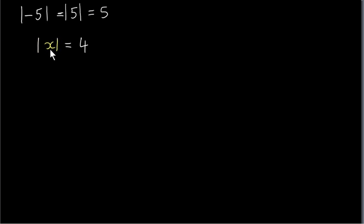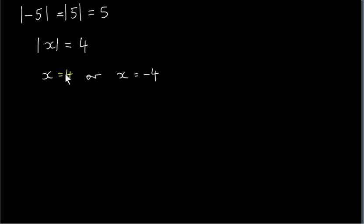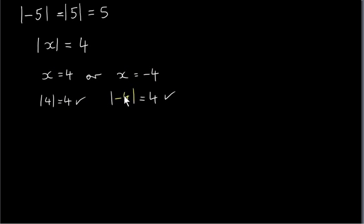Look at this equation: the modulus of x equals four. That means that either x could be four or minus four. If we put four in, we get the modulus of four equals four — that checks out. If we put minus four in, we get that the modulus of minus four is four — that also checks out.